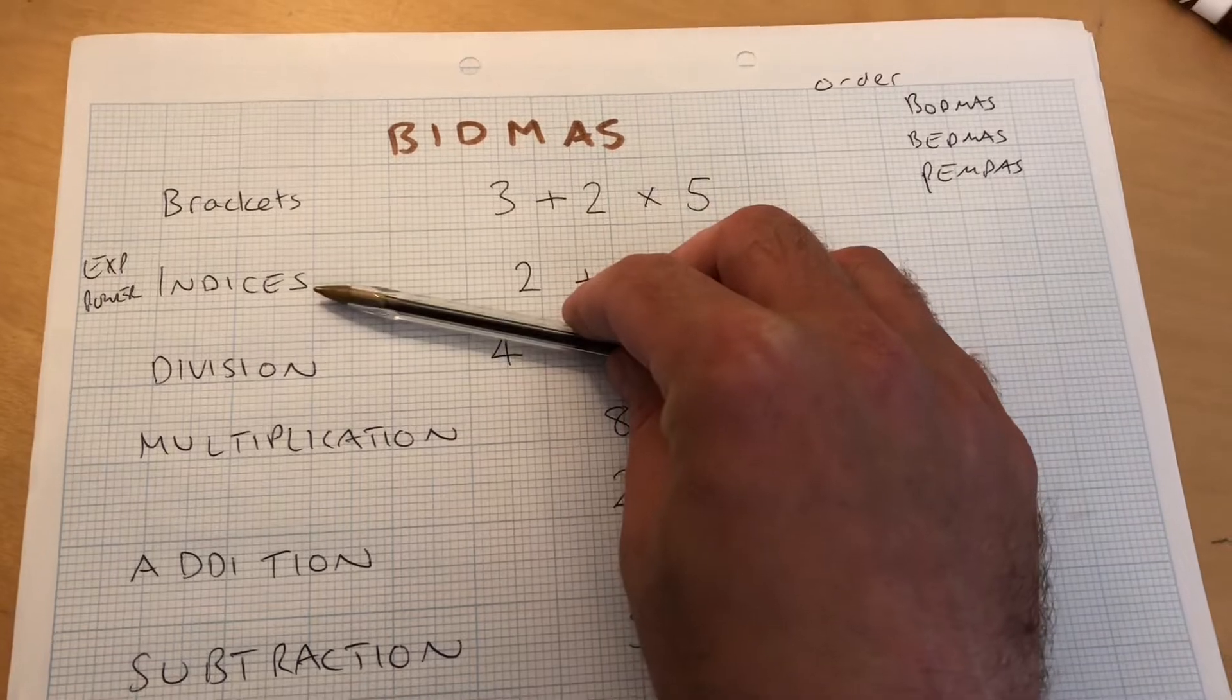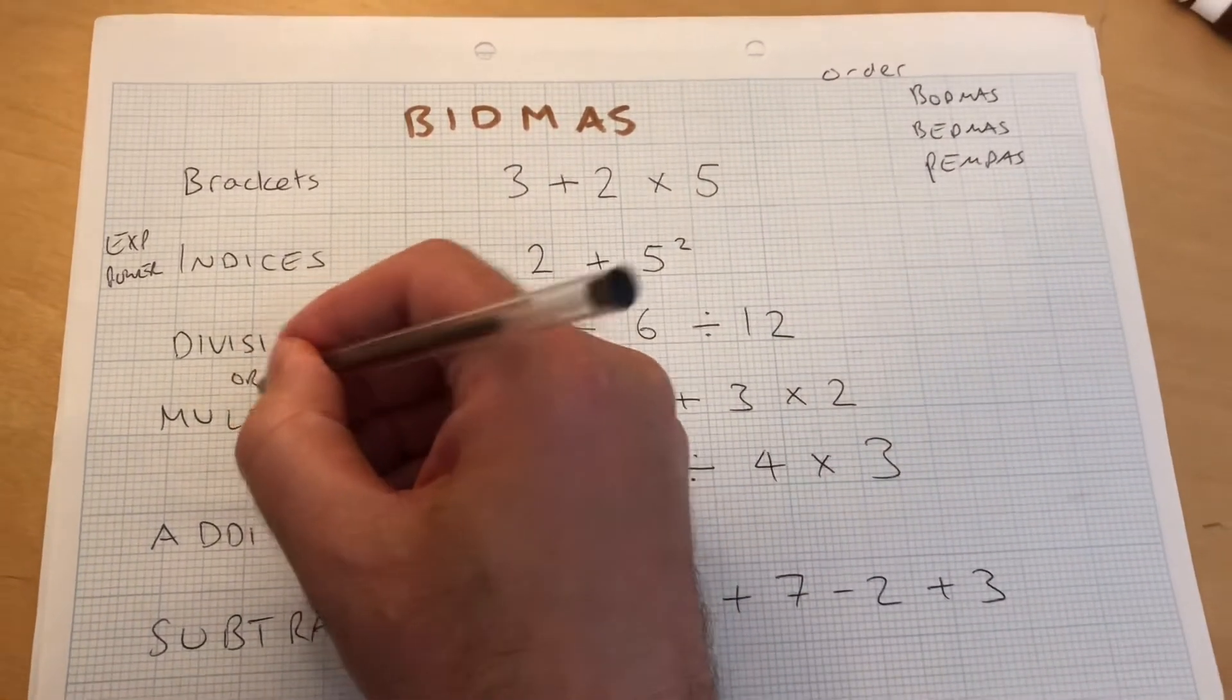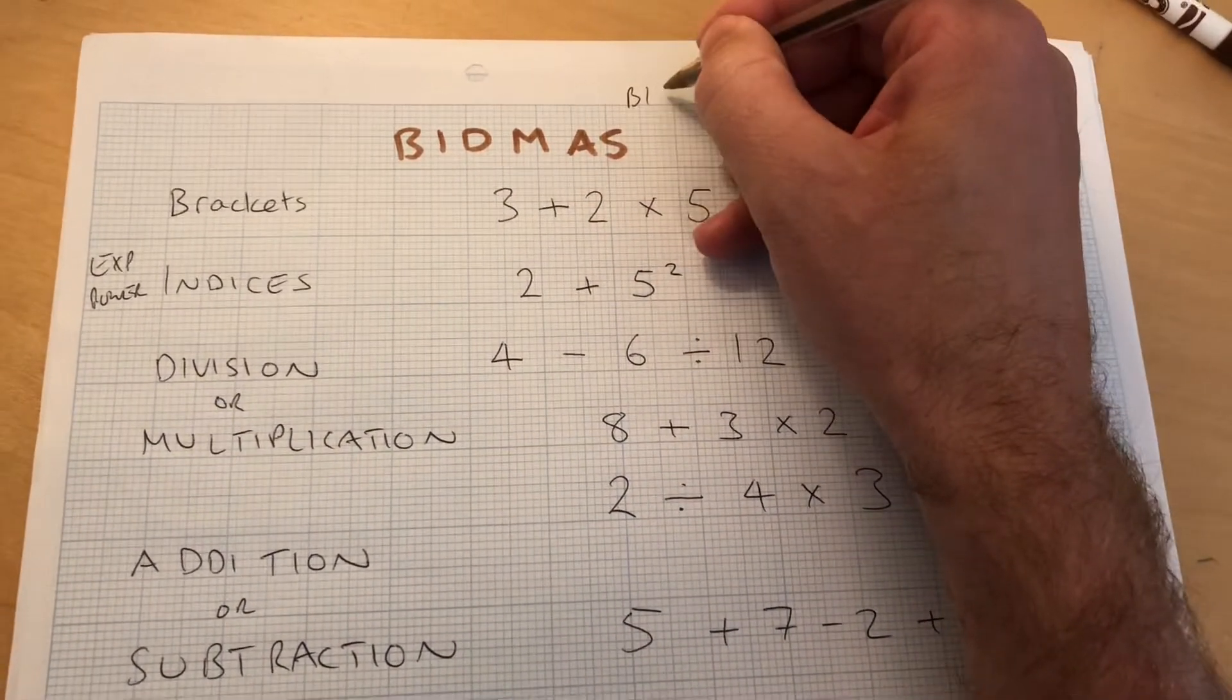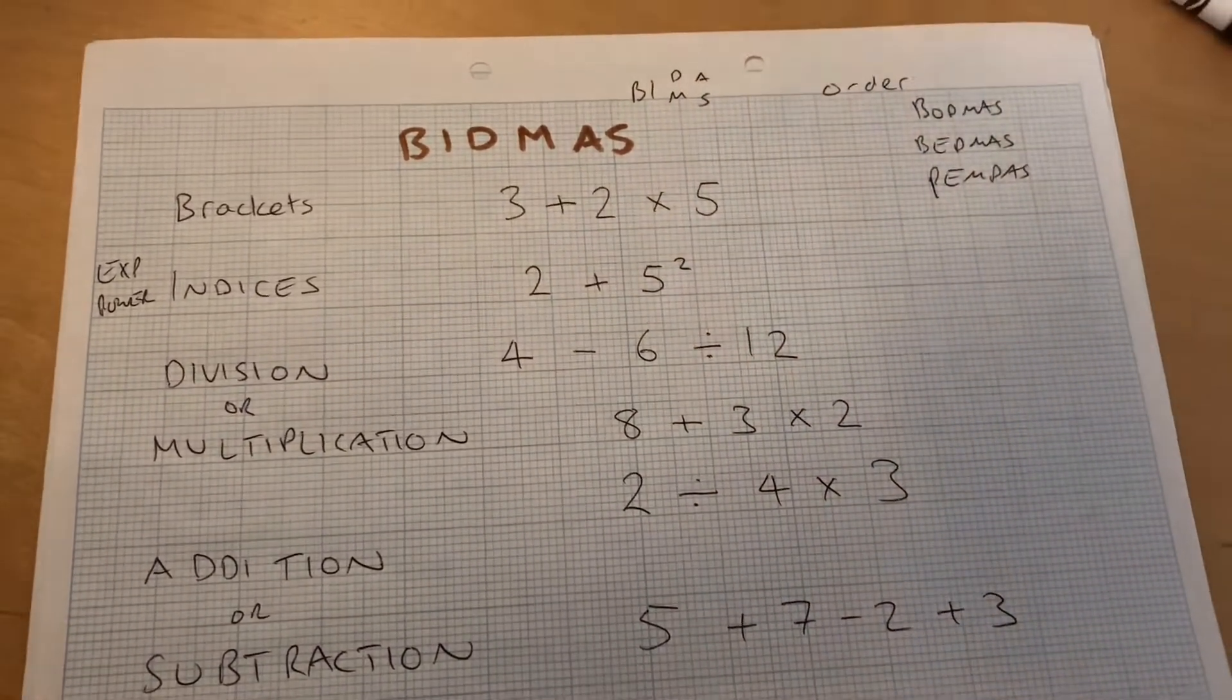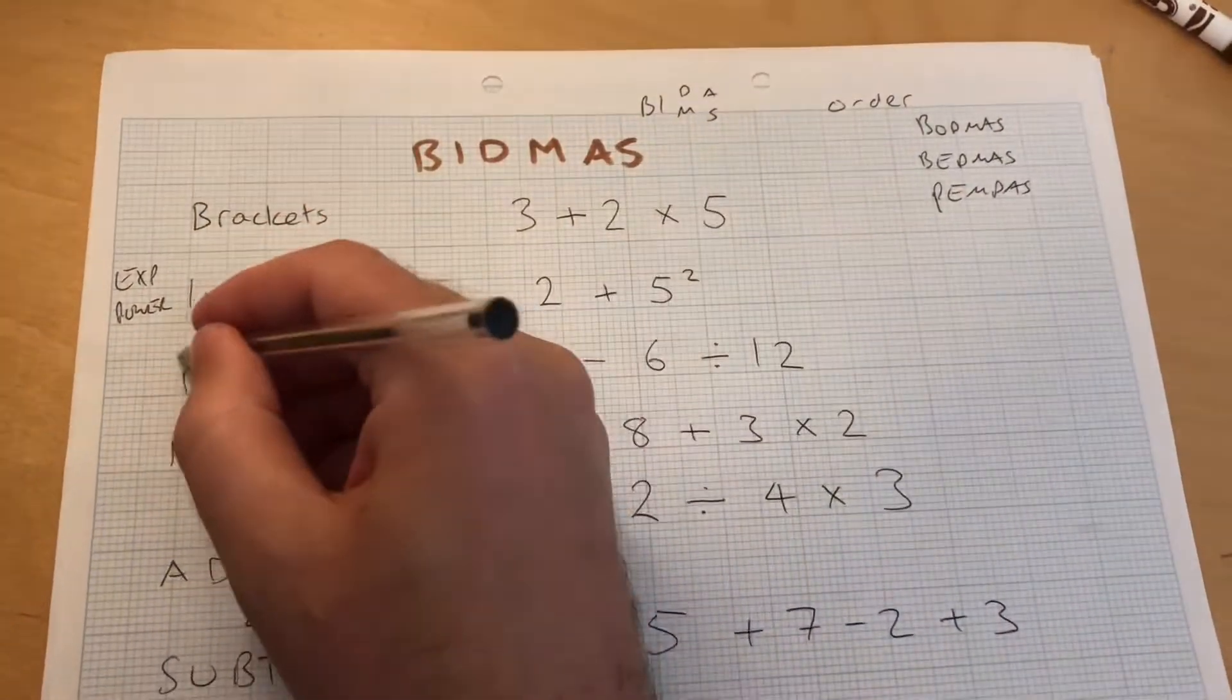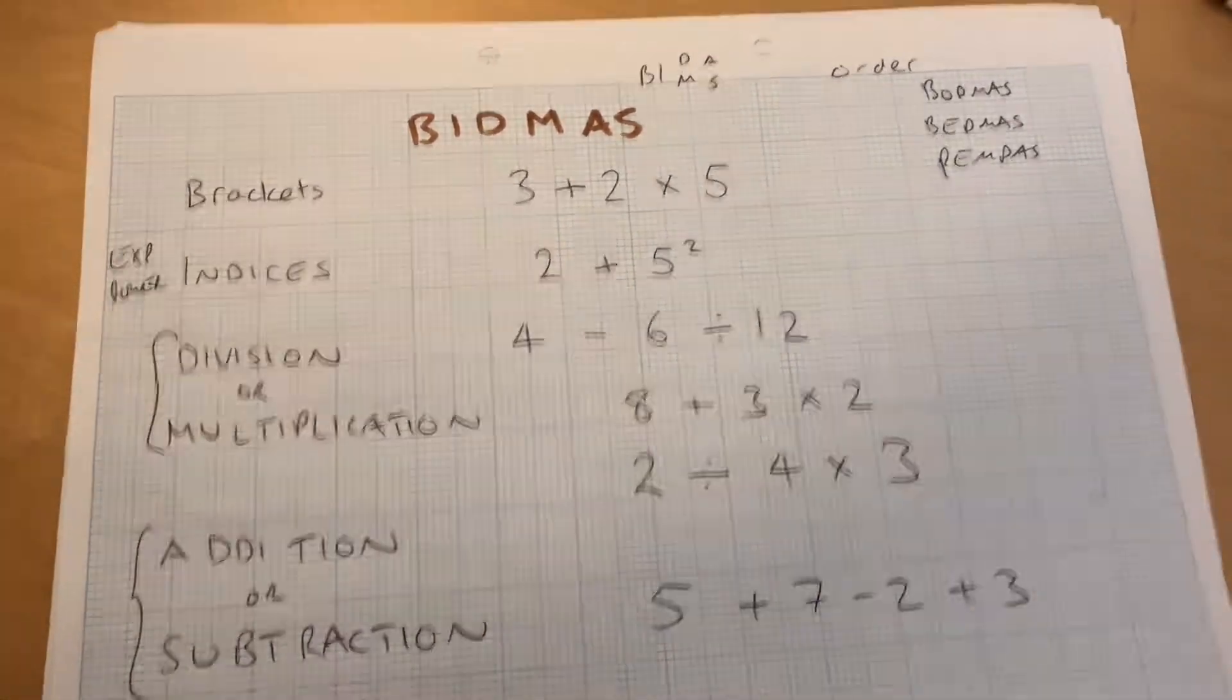Brackets first, then indices, then division or multiplication, then addition or subtraction. I'm going to put the OR there. In fact, I like to write it as that, because division and multiplication and addition or subtraction have the same kind of importance in the order. It's always brackets first, then indices, then one of those two, and then one of those two.